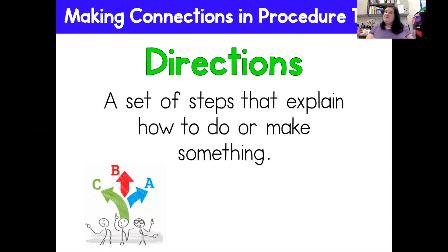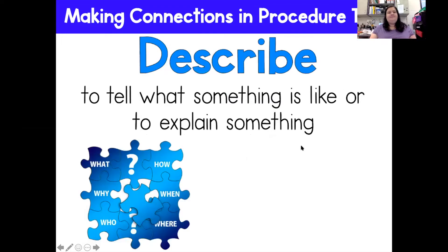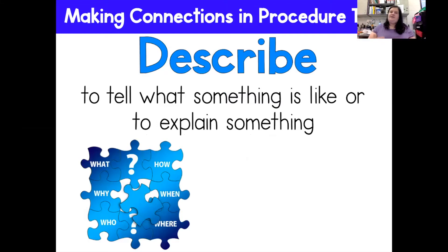We also, in a recipe or even at school, have to follow directions. Directions are a set of steps that explain how to do or make something. And oftentimes in a procedural text, we'll be describing — telling what something is like or explaining something. For example, think about slime. How would slime feel? Would it be pointy? Would it be squishy? You're using words to describe how something tastes in a recipe as well.